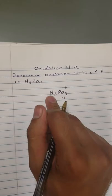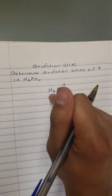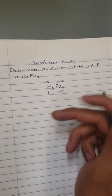We know hydrogen has an oxidation number of 1. So it's going to be 1 times 3 equals 3, and we don't know what P is.